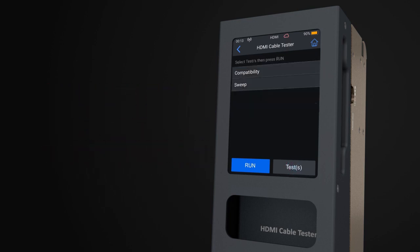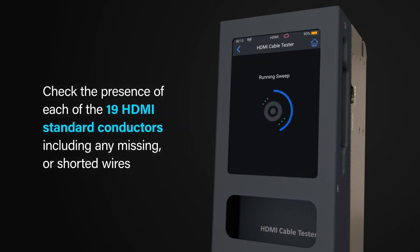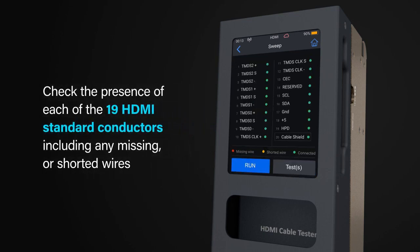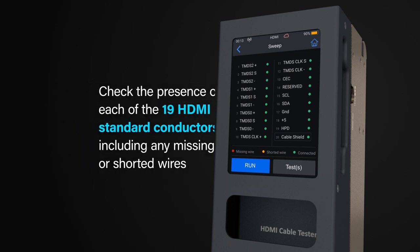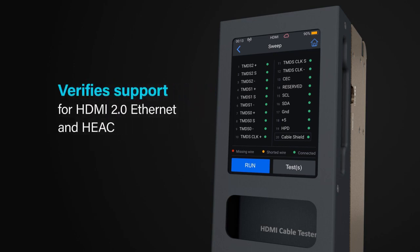The sweep test checks each of the 19 individual cores within your passive HDMI cable, identifying any missing or shortened runs which will affect the transfer of HDMI data. This is clearly reported on the screen once the test has been run.